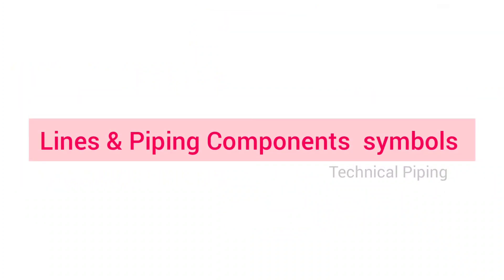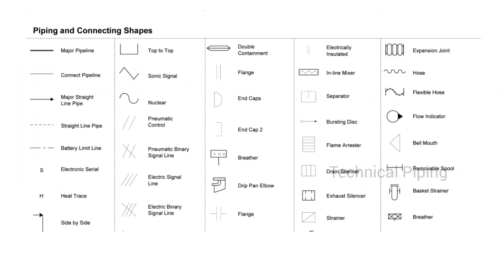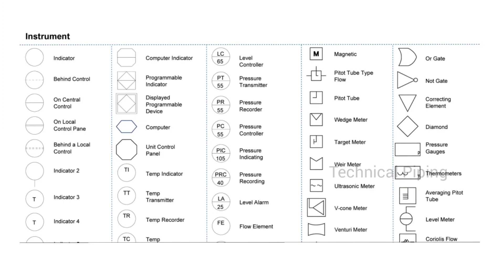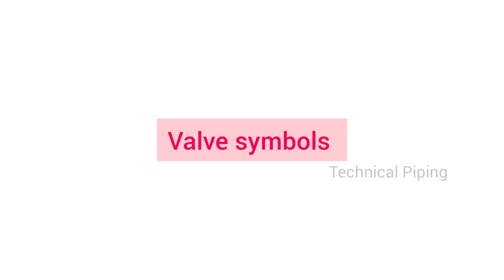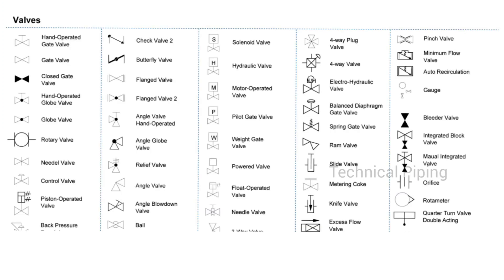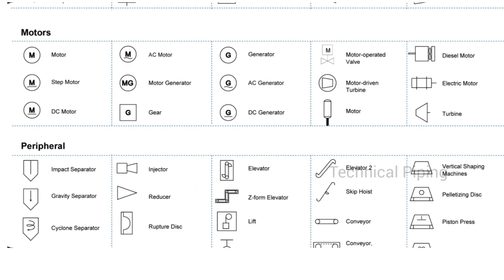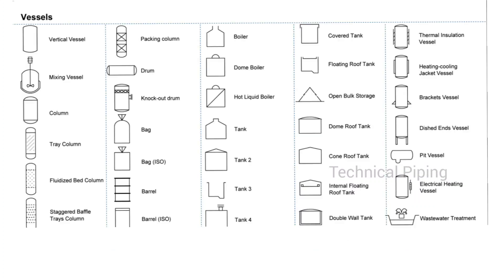The most common P&ID symbols are listed here, including lines and piping components, instrumentation P&ID symbols, valve P&ID symbols, static equipment P&ID symbols, pump and motor P&ID symbols, and other miscellaneous symbols.